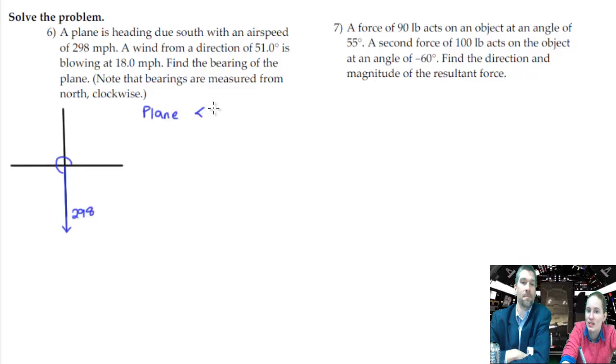So our plane, to get the component form of that, which we'll need, we would do 298 cosine 270, or three pi over two, comma 298 sine 270. And since we're going due south, there should be no x component issue here. That should be on zero. You could actually do this without even looking at what I just wrote down by saying, well, it doesn't go left or right, so the x component is zero. It just goes down, and down is negative, so that's negative 298. Okay, that's for the plane.